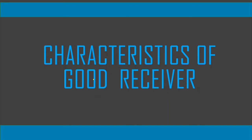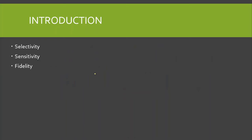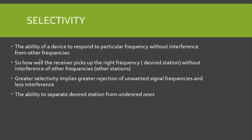Bismillahirrahmanirrahim. In this video we are going to study the characteristics of a good receiver. There are three basic important characteristics of a good receiver: selectivity, sensitivity, and fidelity. Now we are going to discuss them one by one.